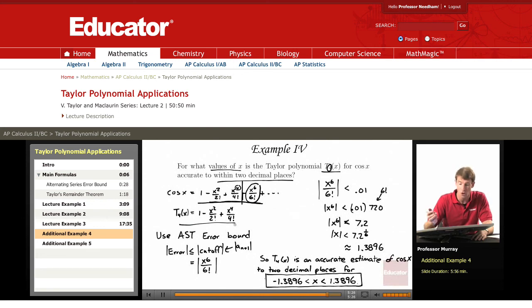We notice that it's an alternating series, so we can use the alternating series error bound. The error bound says that the error is smaller than the first term that we cut off. So that here is x^6 over 6 factorial.